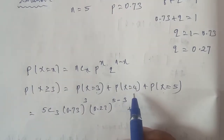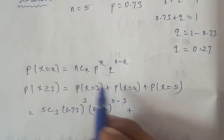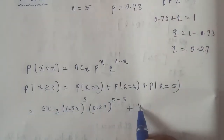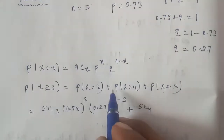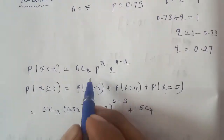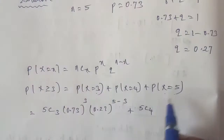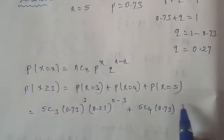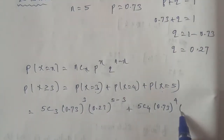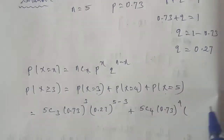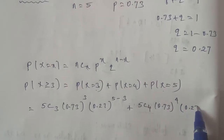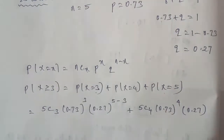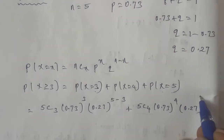For X equals 4: again same formula with n equals 5, so 5C4, multiplied by (0.73) to the power of 4, and (0.27) to the power of n minus x, that is 5 minus 4, which equals 1. So the second term is 5C4 × (0.73)⁴ × (0.27)¹.